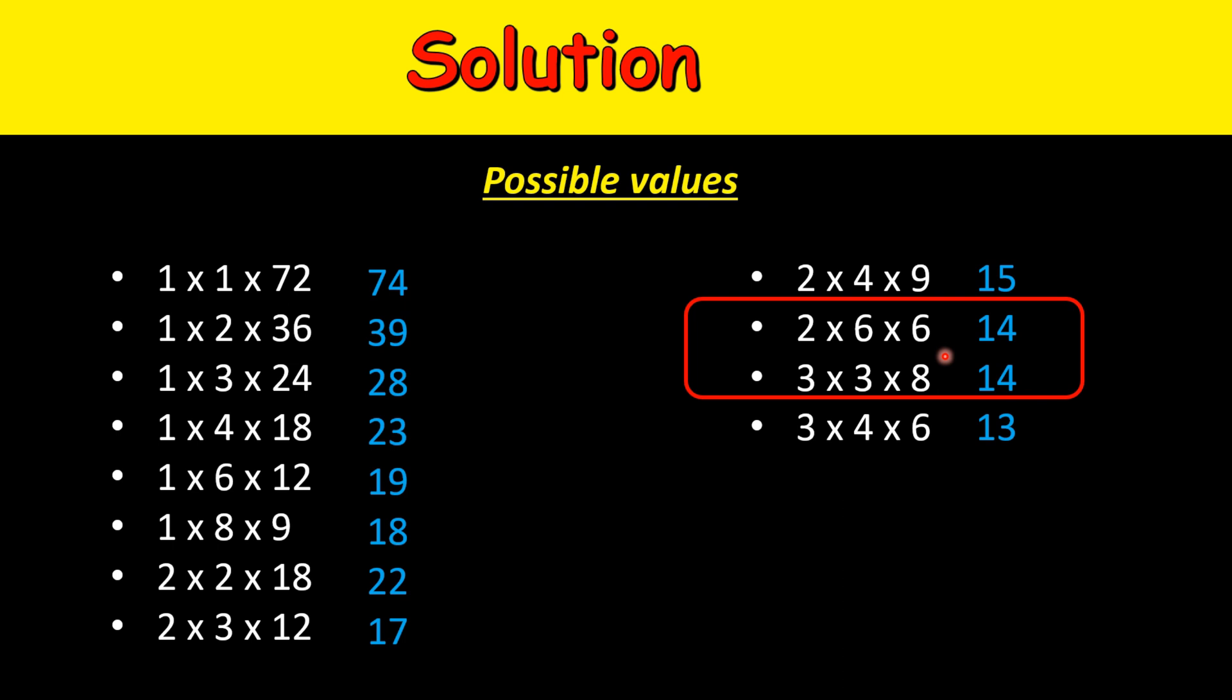So these are the only possibilities. Now comes the third hint. That's why the third hint was required, because in all the other cases you can guess the age based on just two hints. The third hint was the oldest girl loves strawberry ice cream. I have highlighted the oldest, so that means there is a unique oldest girl.